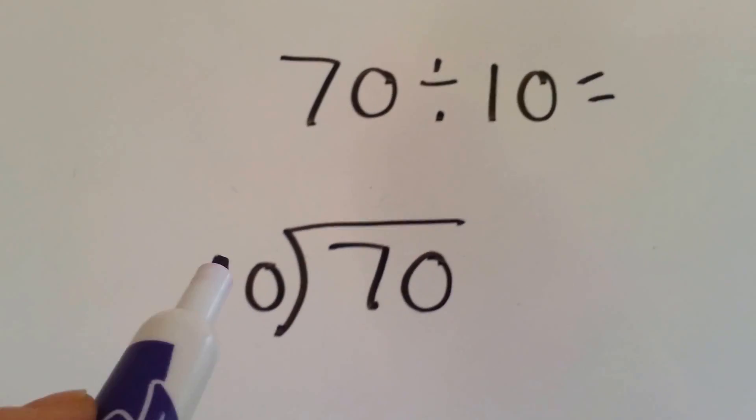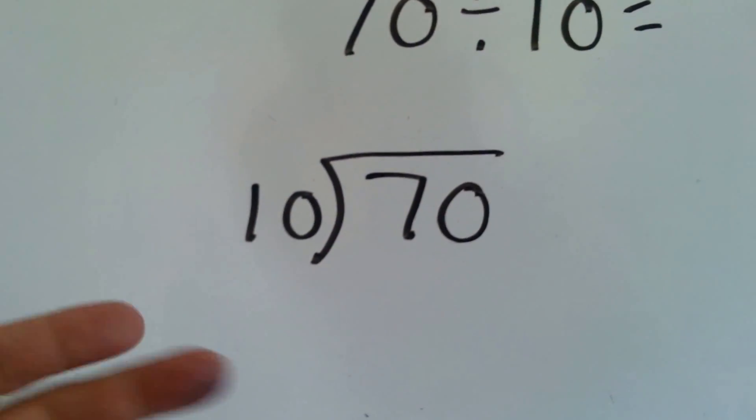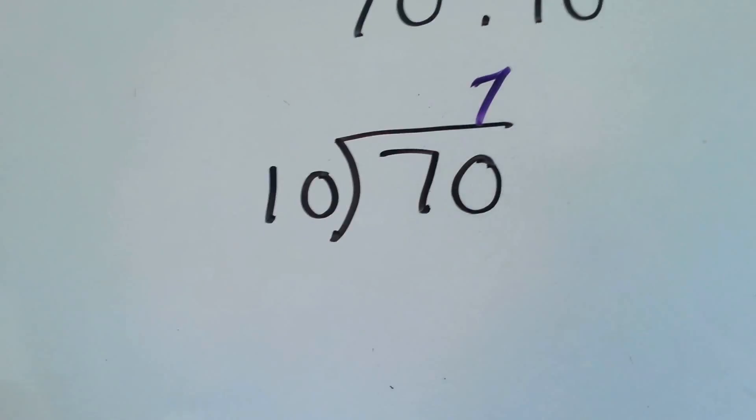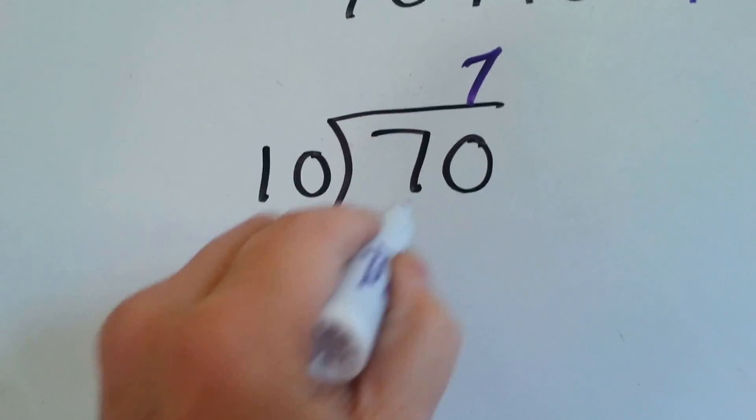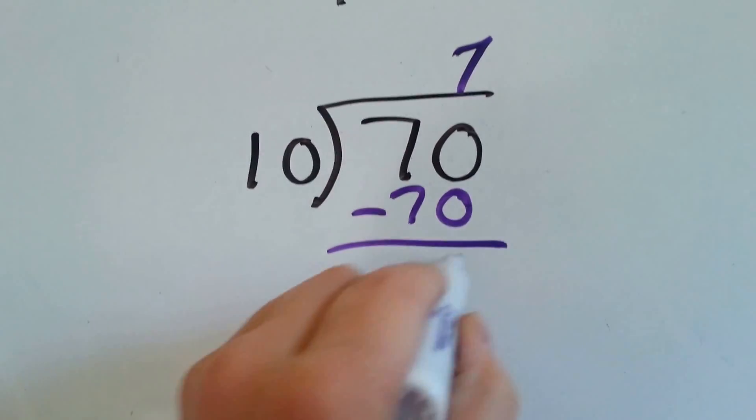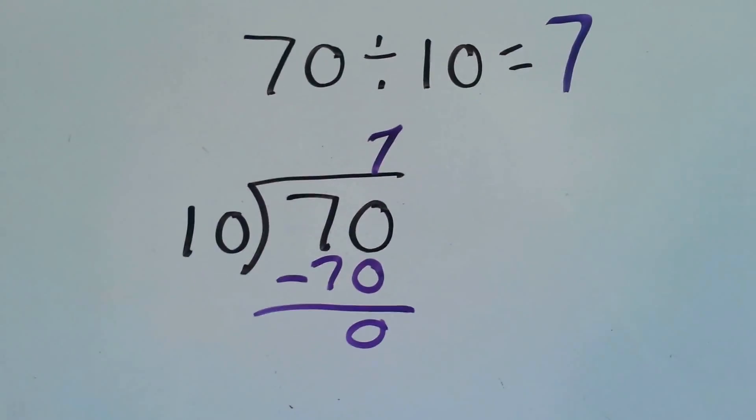Got a couple more. 10 can go into 70 how many times? 10, 20, 30, 40, 50, 60, 70. 7. We're going to do 10 times 7 and get 70. We're going to do our subtraction and get 0. 70 divided by 10 is 7.